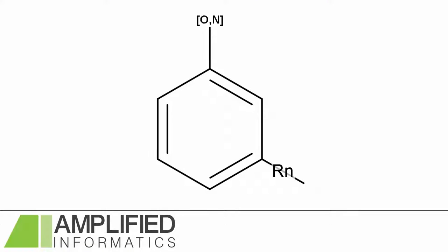For structure number four, we have some query features. At the top here is an atom list, and that means that at that position there must either be a nitrogen or an oxygen on the queried structures.